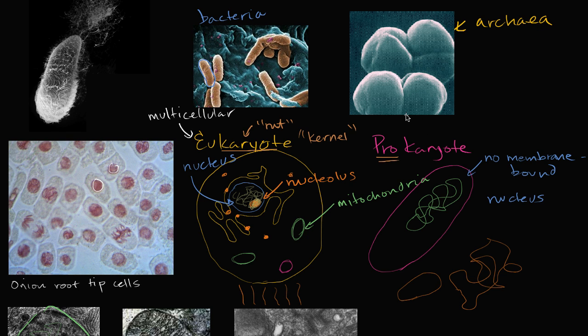And so when we think about the domains of life, people, the current thought is that you have bacteria here. Bacteria here. You have archaea. You have archaea. Archaea. And then you have eukaryotes. I'll do it there. And then you have eukaryotes. Eukaryotes. And these are things that have all of the traits that we've talked about. And so these include plants and animals and fungi and unicellular eukaryotes, protists, and things like that.